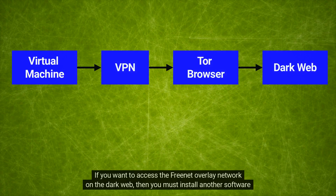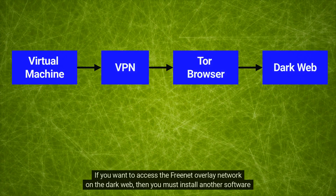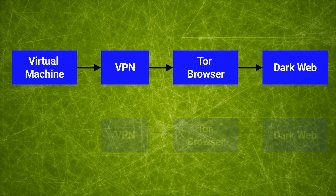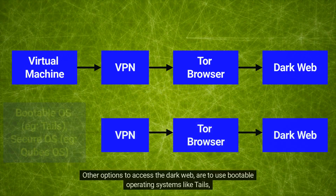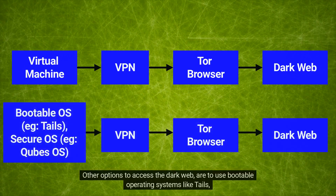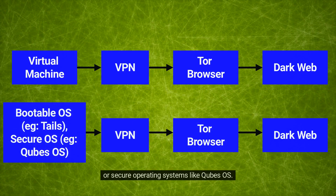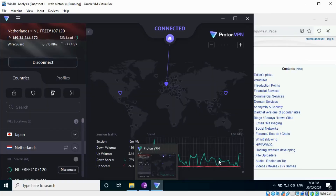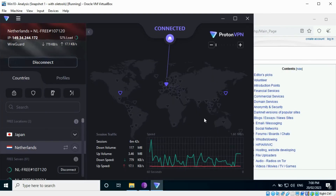If you want to access the Freenet overlay network on the dark web, then you must install another software bundle like Tor. Other options to access the dark web are to use bootable operating systems like Tails, or secure operating systems like Qubes OS.